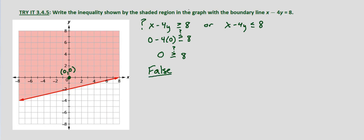That indicates it's going to be the other one, but we need to verify using the same process. 0 minus 4 times 0: is that less than or equal to 8? Same value, 0 minus 0, which is 0. Is that less than or equal to 8? That's a true statement. This verifies that our inequality is x minus 4y is less than or equal to 8.